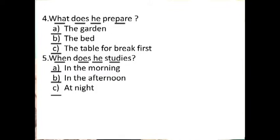Now, listen to the question again. The correct answer for question one is: B. A good helper. What grade is he in? The correct answer is: A. Grade 1. What does he buy from the store? The right answer is: C. Bread.